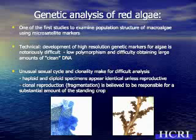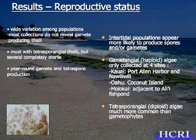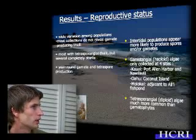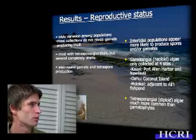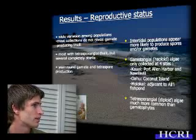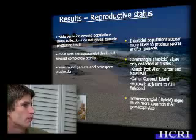Both haploid and diploid specimens appear identical unless they're actually reproductive, which is relatively rare. We examined reproductive status and found a wide variety in distribution among populations. Most of our collections did not reveal gamete-producing thalli, though almost every collection did produce tetraspores — a couple were completely sterile. The seasonality seems to be year-round for both gamete and tetraspore production, and intertidal populations appear more likely to produce spores and gametes. We only collected gametophyte haploid plants at four sites: both sites on Kauai, one on Oahu at Coconut Island, and one on Molokai.